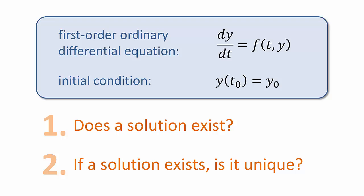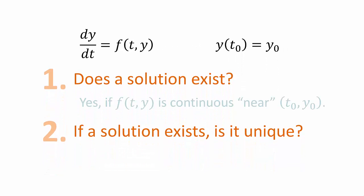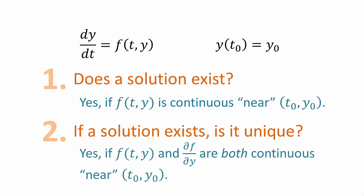Fortunately, we have a theorem that gives simple conditions under which this initial value problem has a unique solution. Informally, the theorem says that if f is continuous near the point, then a solution exists. Additionally, if the partial derivative of f with respect to y is also continuous near the point, then the solution is unique.